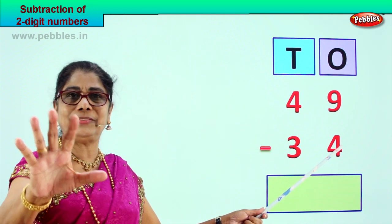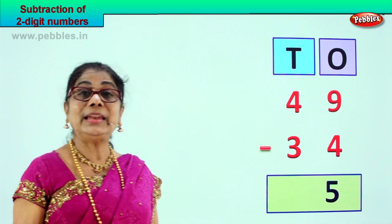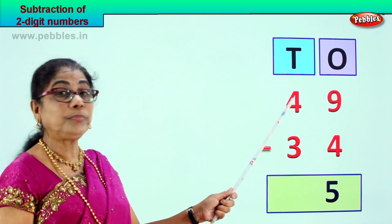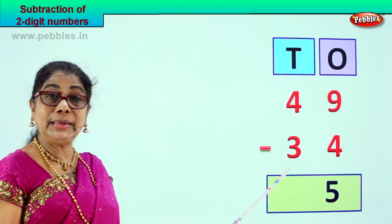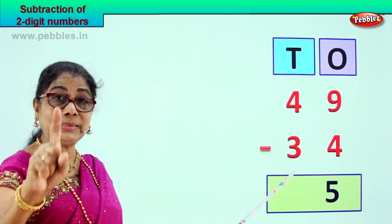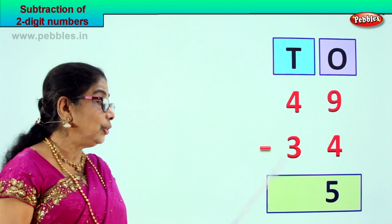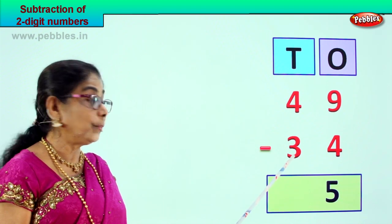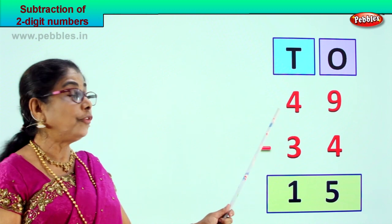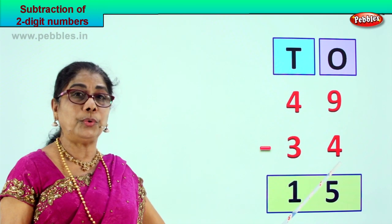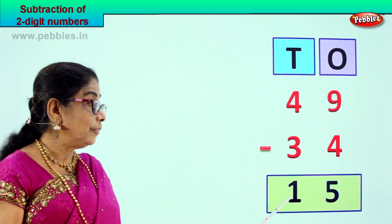Nine minus four — count on: five, six, seven, eight, nine — nine minus four is five. Nine take away four is five. Now let's go to the tens place. Four minus three is one — four take away three, you get one. So your answer is fifteen. Forty-nine minus thirty-four, your answer is 15.